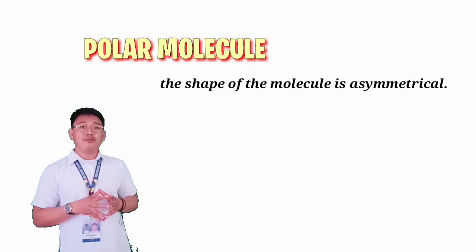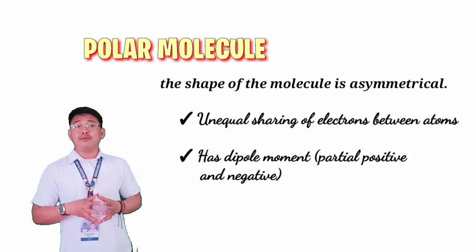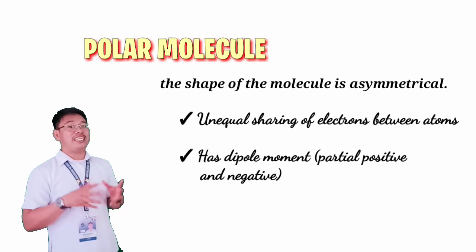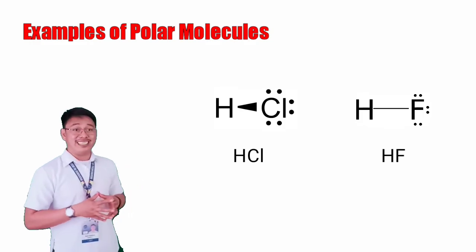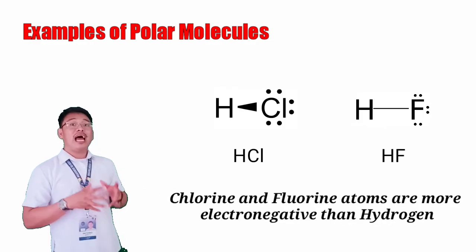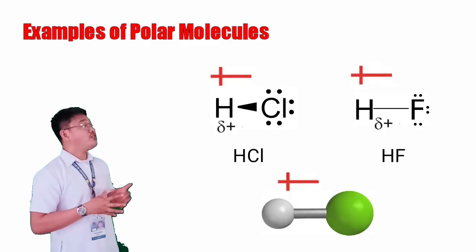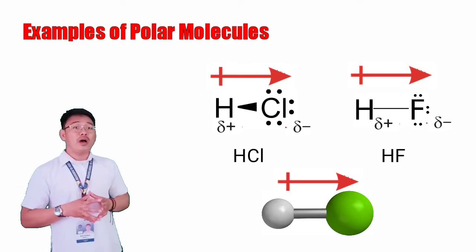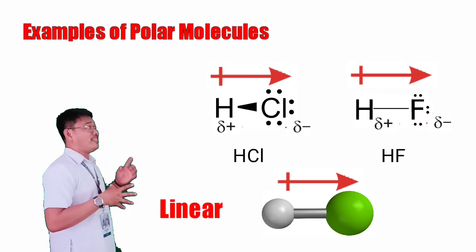A molecule is said to be polar if the shape of the molecule is asymmetrical. This is due to the unequal sharing of electrons between atoms creating a dipole moment, meaning there are partial positive and negative in the atoms of a molecule. Example, hydrochloric acid and hydrofluoric acid, where chlorine and fluorine atoms are more electronegative than hydrogen. Therefore, hydrogen is attracted to chlorine and fluorine. The central atom or one of the central atoms has lone pair making them unequal although the molecules are in linear shape.